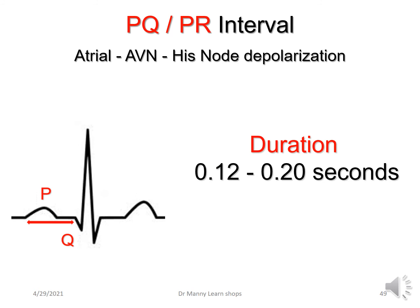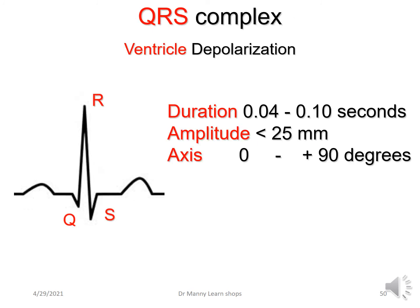The PR interval — also known as the PQ interval — represents atrial, AV nodal, and His nodal depolarization. In an adult, it's typically between 0.12 and 0.20 seconds, or 120 to 200 milliseconds. Anything longer or shorter may be problematic. The QRS complex represents ventricular depolarization and it's narrow. Its duration is between 0.04 seconds — one small square — and 0.10 seconds — one and a half small squares. The amplitude as a general rule should be less than 25 millimetres in height. The axis is from 0 to plus 90 degrees in a left ventricular dominant patient, which a normal adult is.